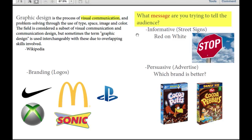Like a stop sign — red is associated with danger. But basically what I was trying to say is: is it informative? Meaning things like street signs or maps, or anything that relays information to a specific audience. Okay, so there's informative, which we explained. And then there's persuasive, such as advertising.